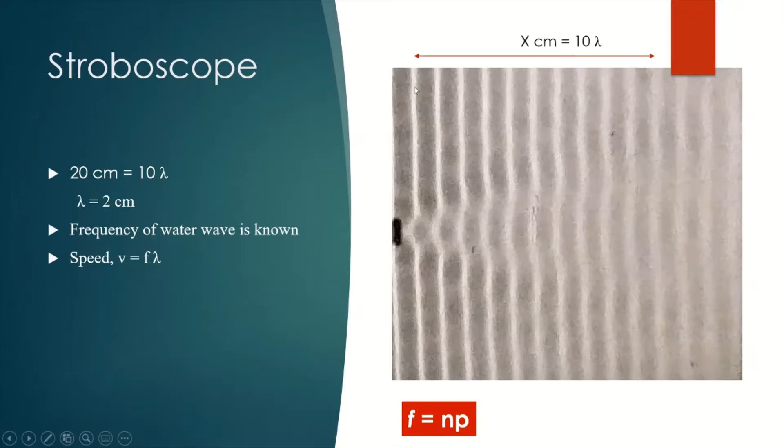Remember crest produces a bright fringe. So this is the position of crest, and this is also another crest. Therefore, this is 1 lambda, 2 lambda, 3, 4, 5, 6, 7, 8, 9, 10.